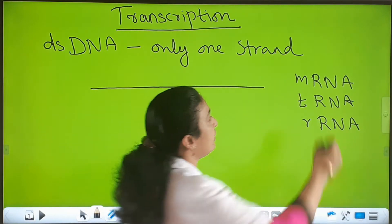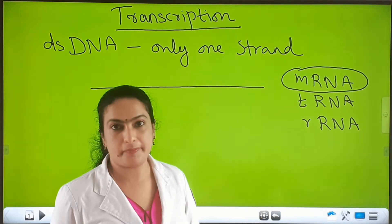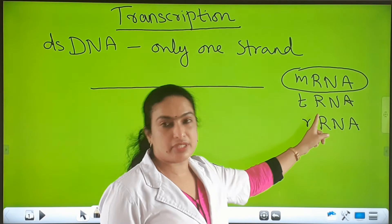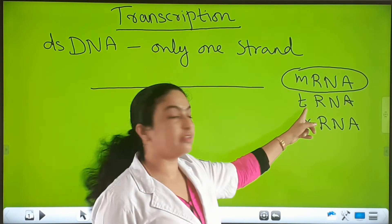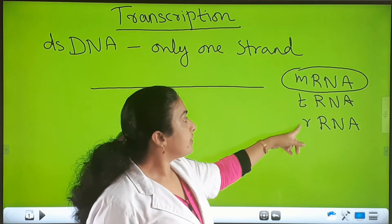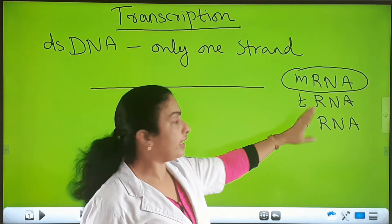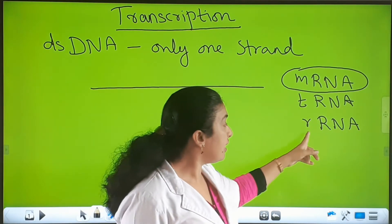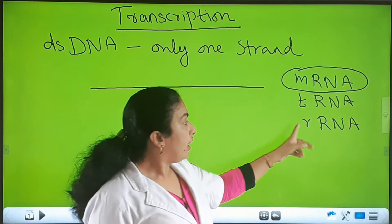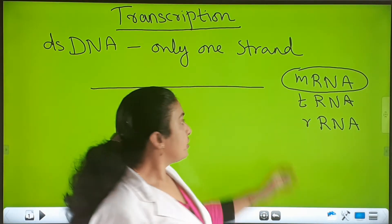Only the genetic information is copied in mRNA. The tRNA acts as an adaptor molecule — I will teach you about that in translation. And rRNA, ribosomal RNA, acts as a subunit of translation.